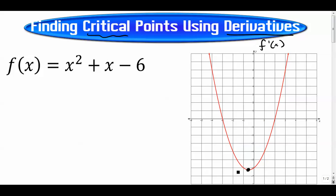When the graph flattens out and changes from a negative derivative to a positive derivative, that's called a minimum value — an extrema, absolute min, or in many cases just a local or relative minimum. At that point the derivative is zero, because the slope of the tangent line is zero.